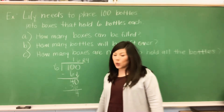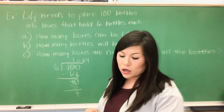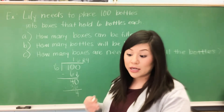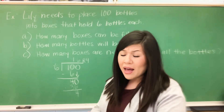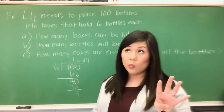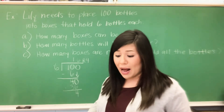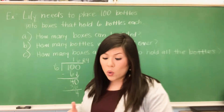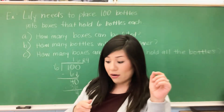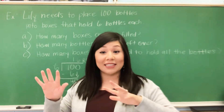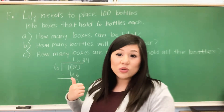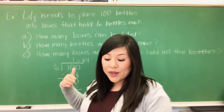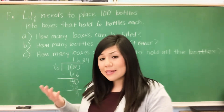We're going to put our remainder four here. So let's go back to the questions. The result is 16 remainder four, which means that 100 bottles can be separated into 16 groups of six bottles. However, there are going to be four extra bottles. So for letter A — how many boxes can be filled? We know that 16 boxes can be filled, with six bottles in each group. So 16 boxes can be filled.